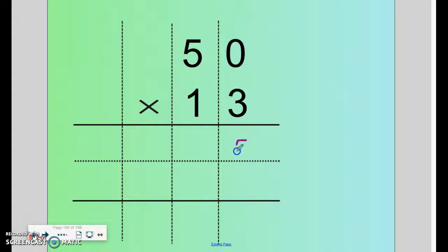3 times 0 is 0. 3 times 5 is 15. Kill the 3, bury it. 1 times 0 is 0. 1 times 5 is 5. We add the two parts and we get 650.